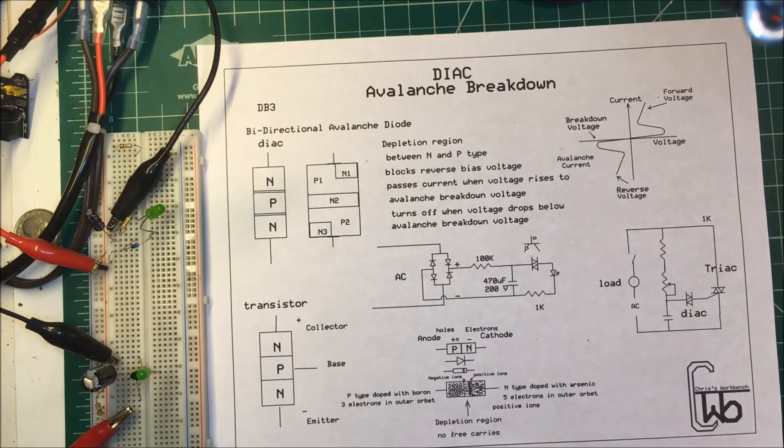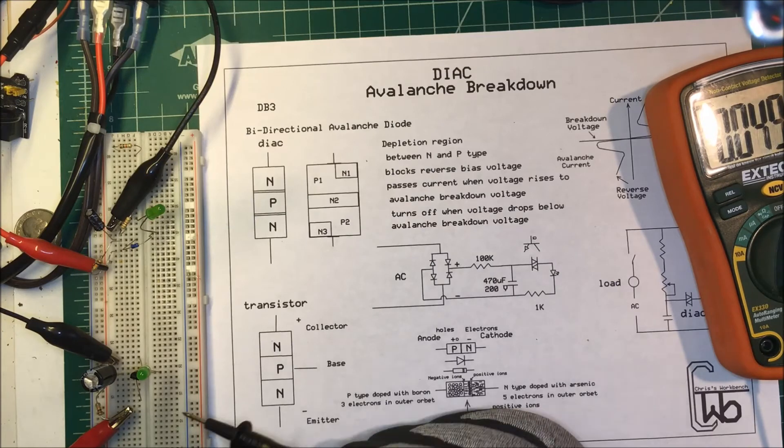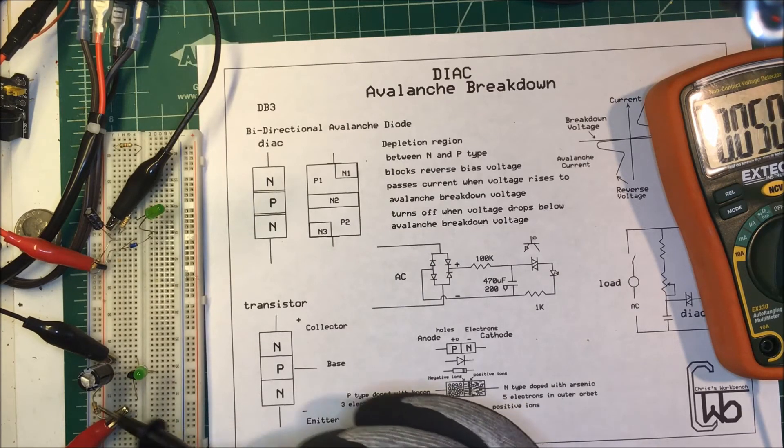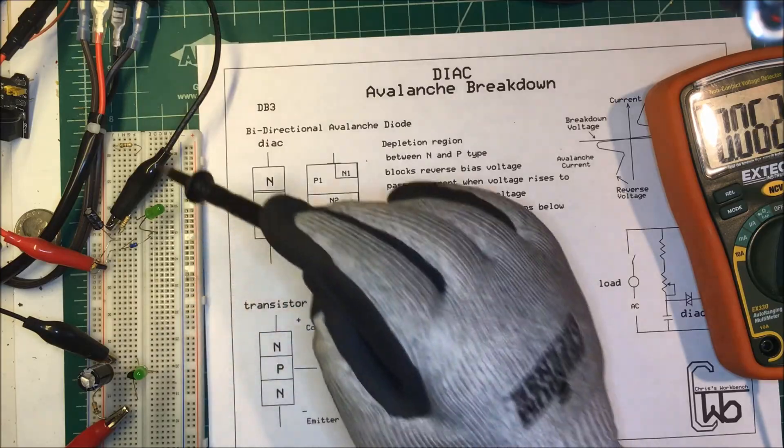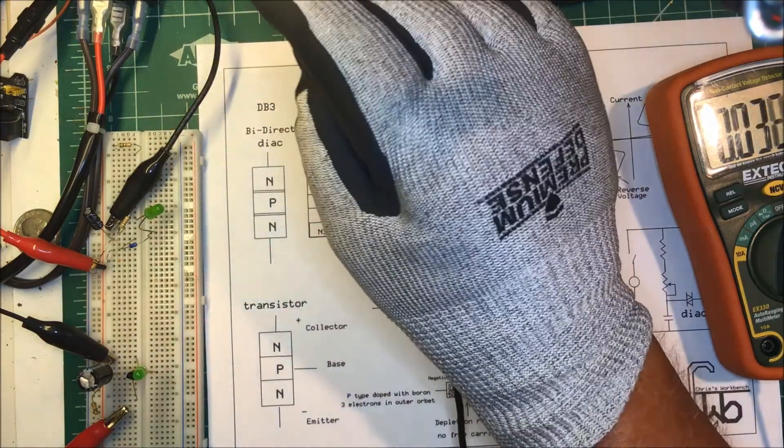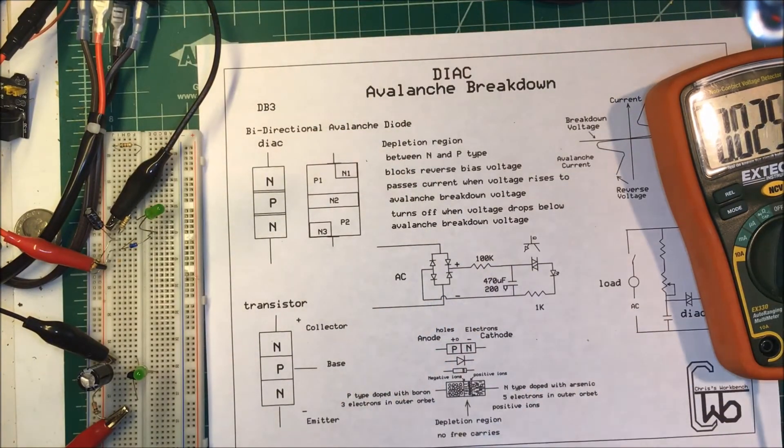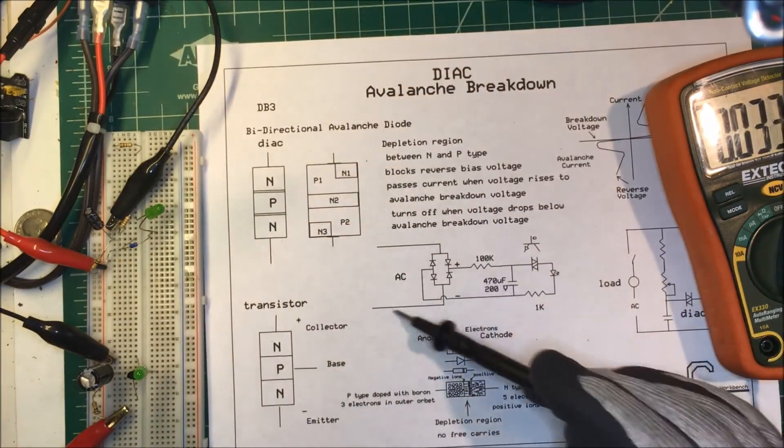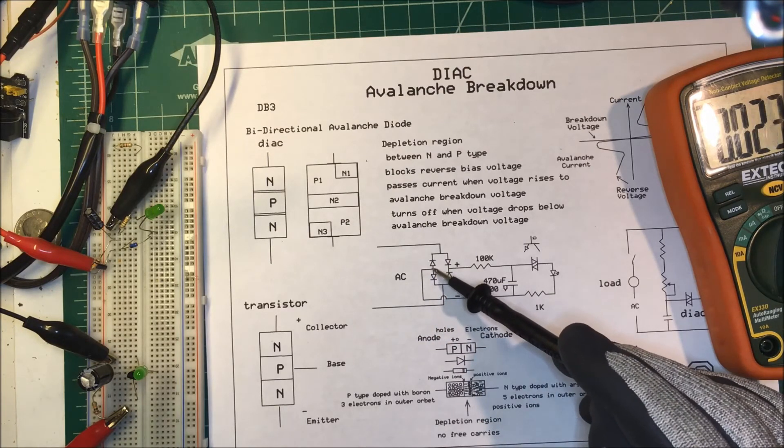One other side note here, this power supply here is just a regular benchtop power supply and it only puts out 30 volts, not enough to make this one work. So this one here is off of a variac transformer and going through a bridge rectifier. Now on a variac transformer it's not grounded. This is the negative side here, it's got potential to ground because these two legs aren't grounded here.